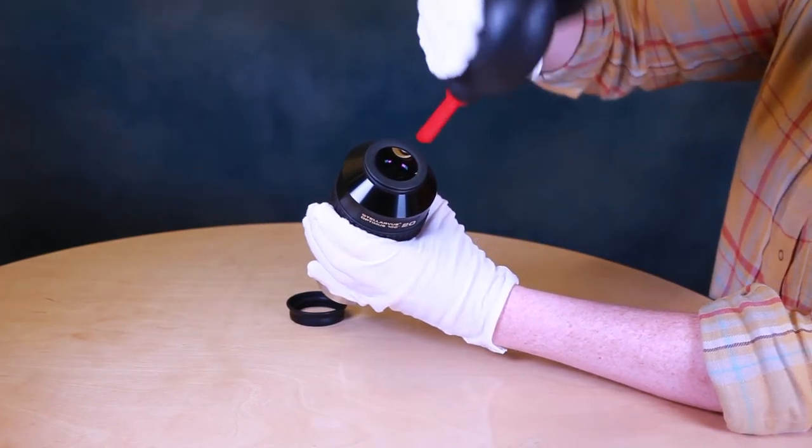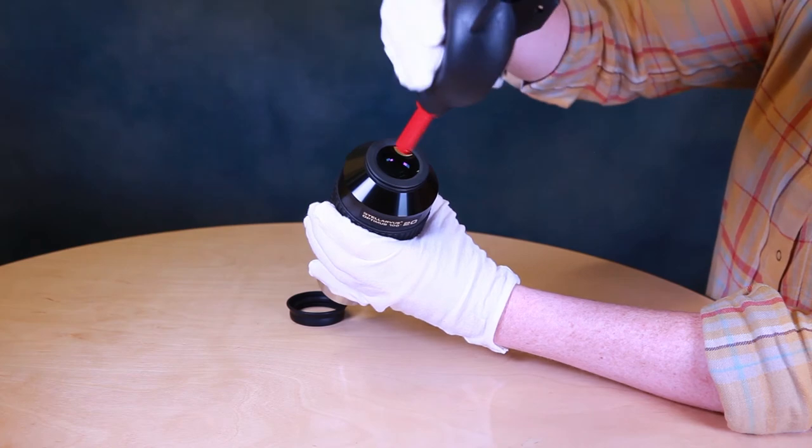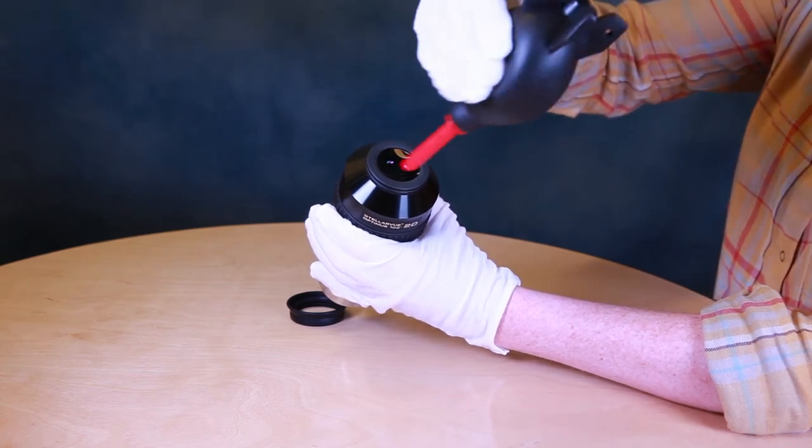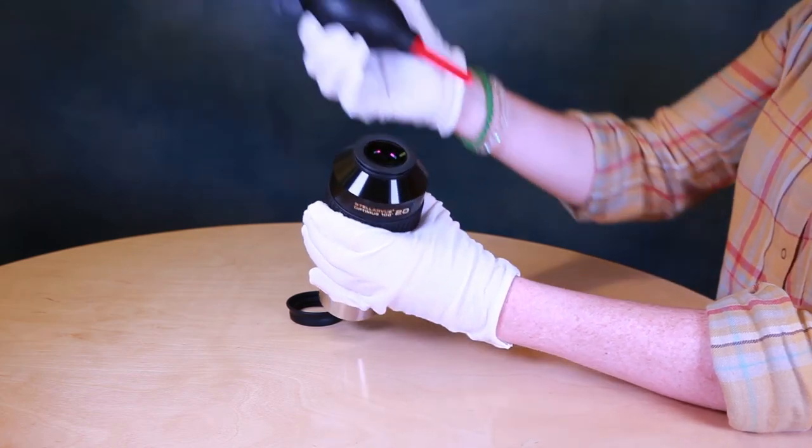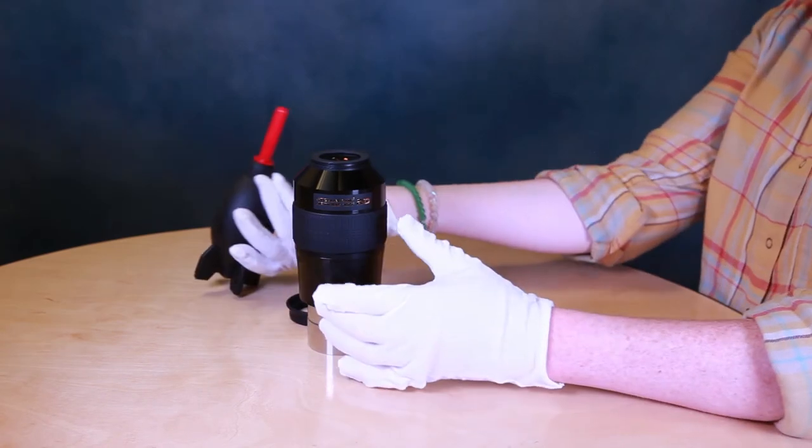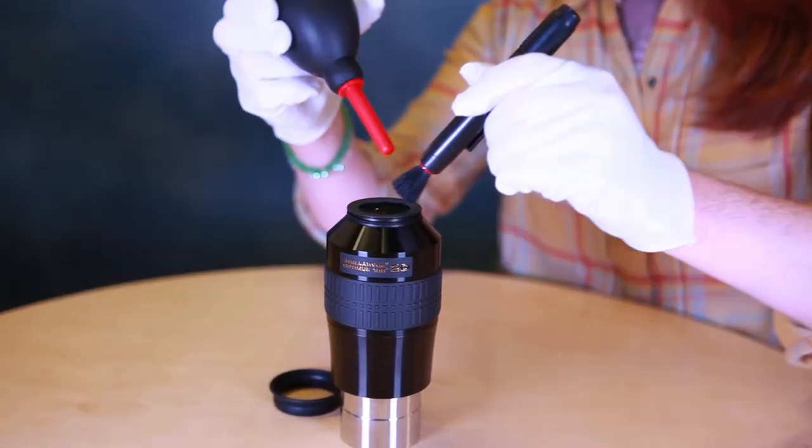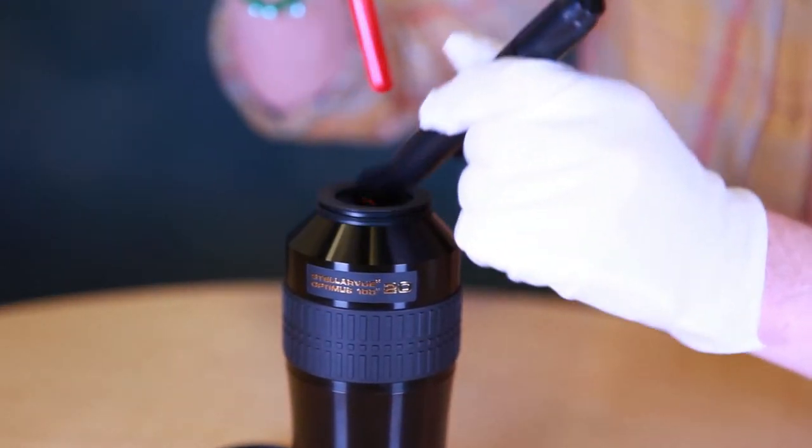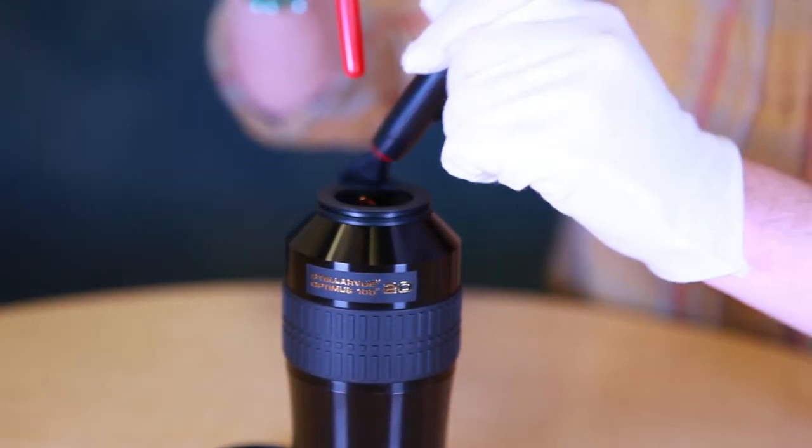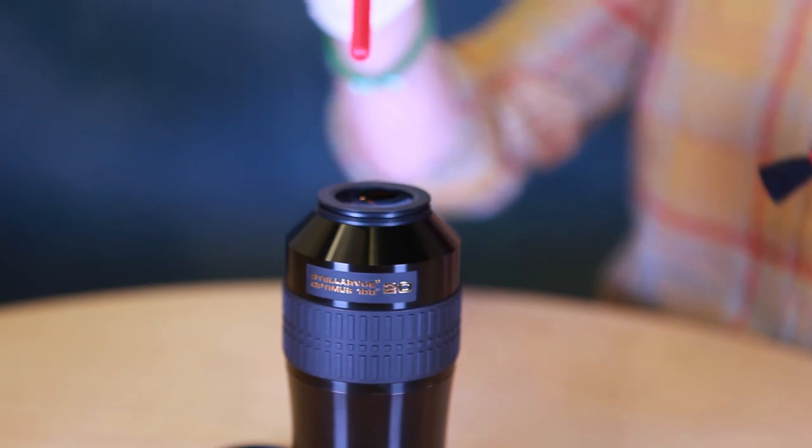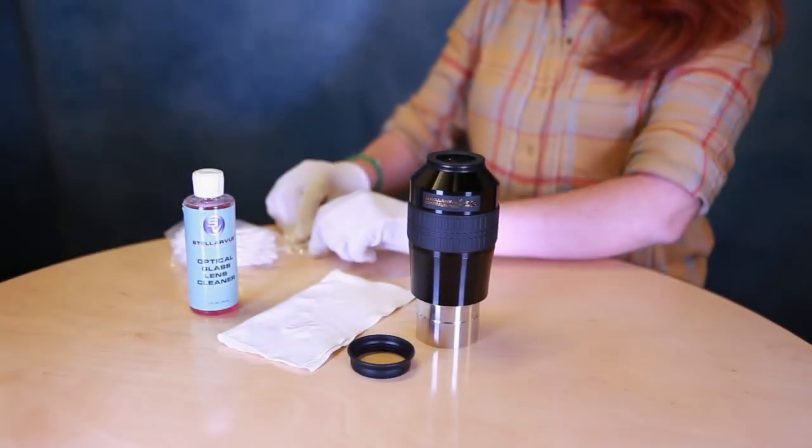Start by using your bulb blower. Blow off all of the loose dust on the lens surface. But don't just stop there. Use your camel hair or lens pen brush with the bulb blower to remove all of the loose material. Now you can go ahead and clean the optical surface.